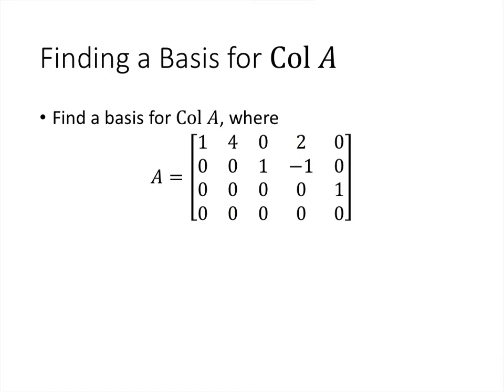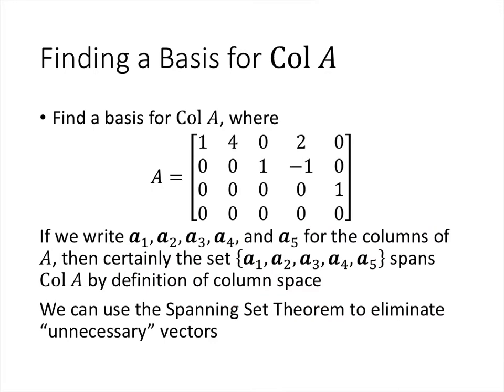Now let's look at finding a basis for the column space of A. Let's start with a matrix that's already in reduced echelon form. The column space of A is the span of all the columns of A. If we name them A1, A2, A3, A4, and A5, the column space is all vectors we can get by taking linear combinations of the columns of A. That means we have a spanning set, but the question is whether it's a basis — and that depends on whether those columns are linearly independent.